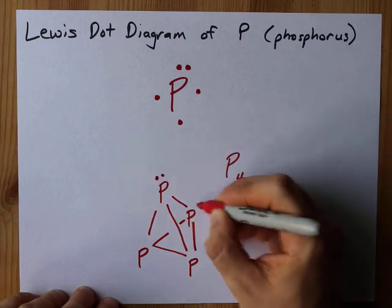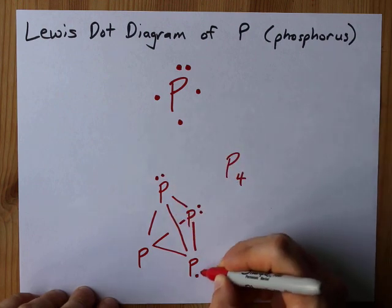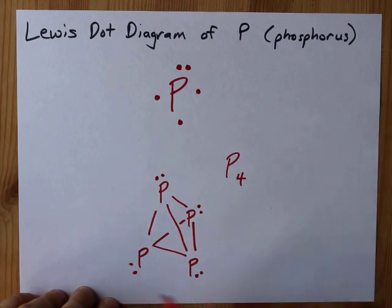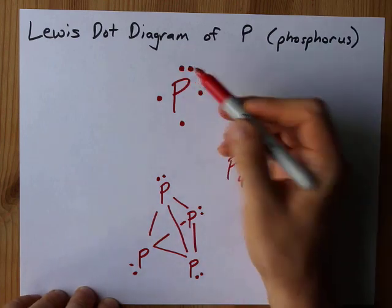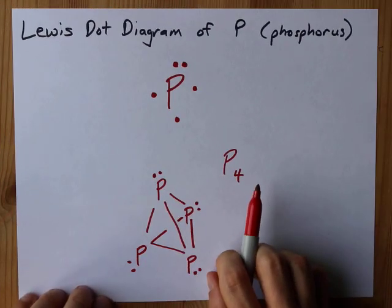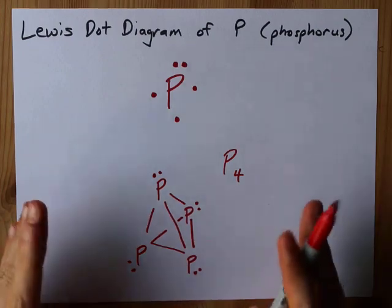But actually the lone pairs are still on each of the phosphoruses. Those lone pairs are the same as that lone pair there. This is the Lewis structure for P4, but I'm skeptical you're being asked that.